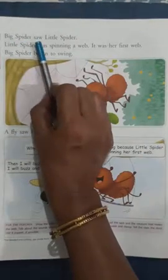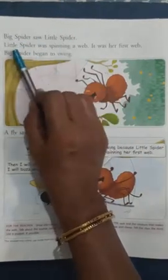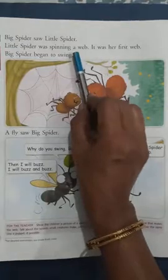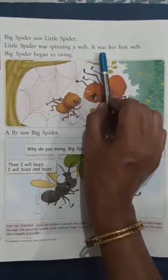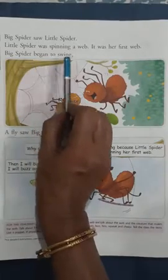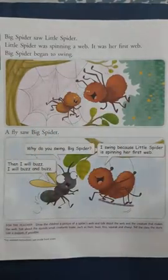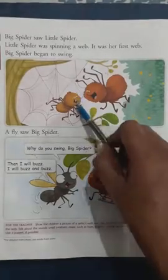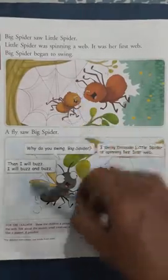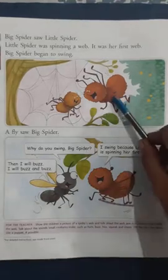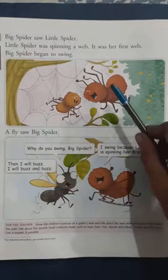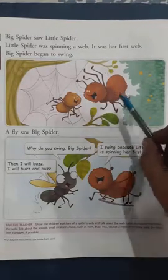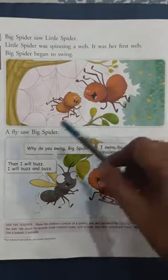So, read again. Big spider saw little spider. Little spider was spinning a web. It was her first web. Big spider began to swing. Who was spinning a web? Yes, little spider was spinning a web. And who began to swing? Big spider began to swing.